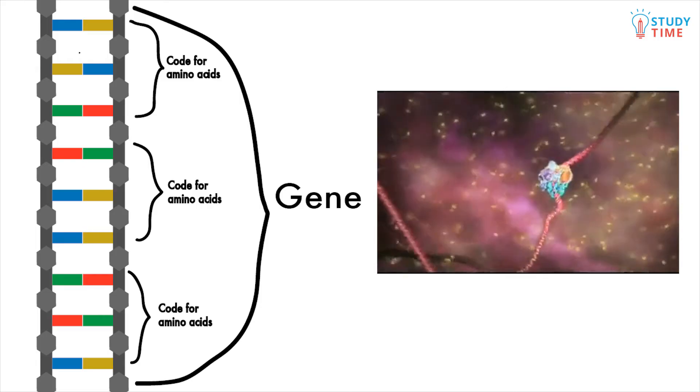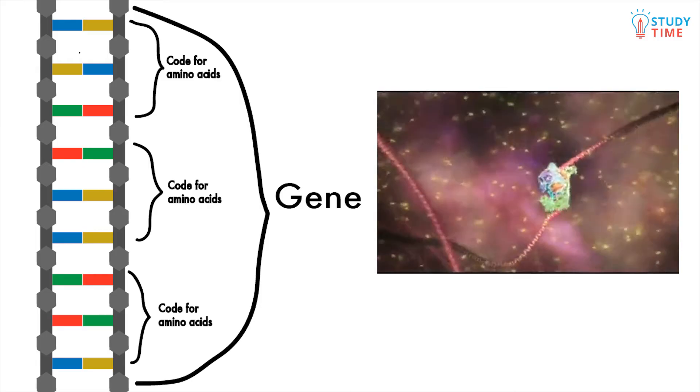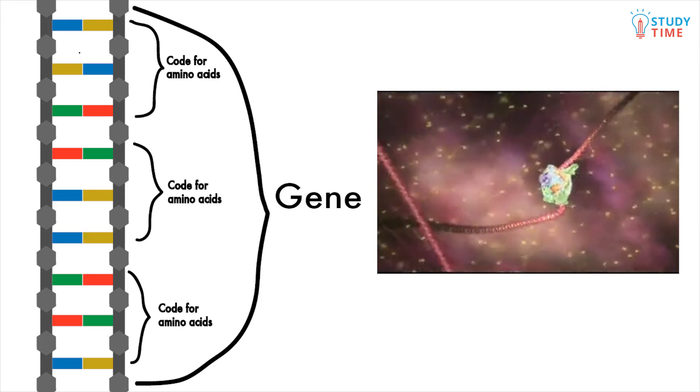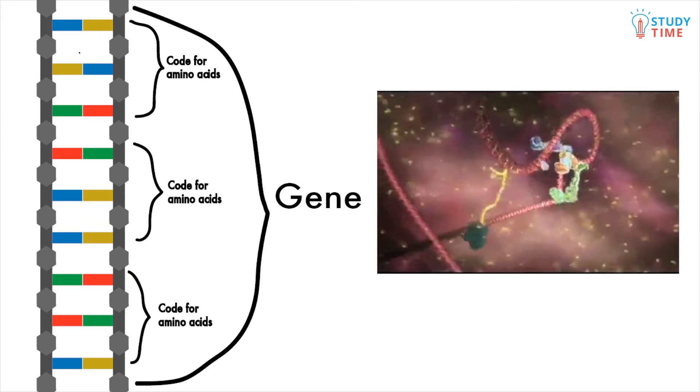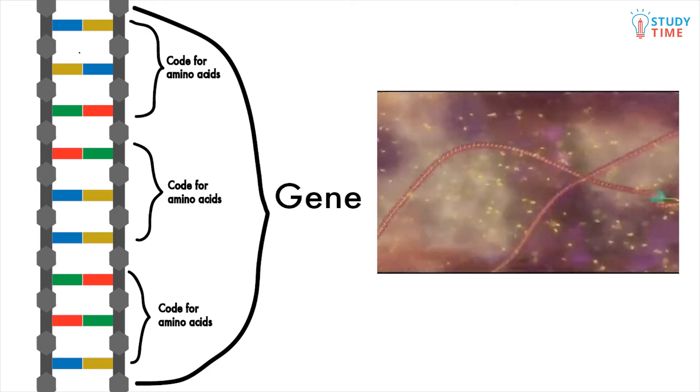These chains of protein-forming codes are called genes. The DNA in the cells of all living things is made up of the exact same chemicals and base pairs. It is the order of these pairs that creates the diversity of life we see around us.